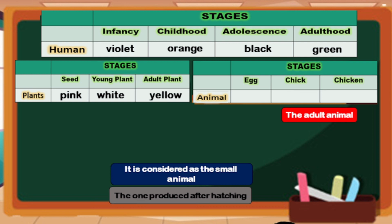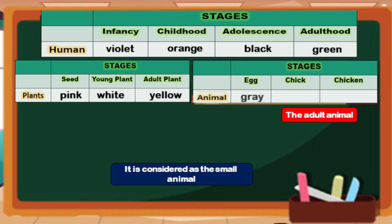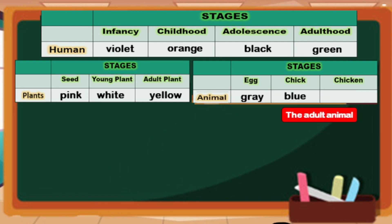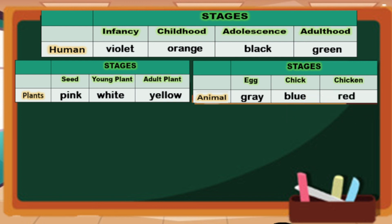The last table is for chicken, which is an animal. For the first stage — egg — the answer is color gray, which is produced after hatching. Next, for chick, the answer is color blue, which is considered the small adult animal. And the last stage is chicken, color red, which is the adult animal. You have already completed our table. Good job, kids!